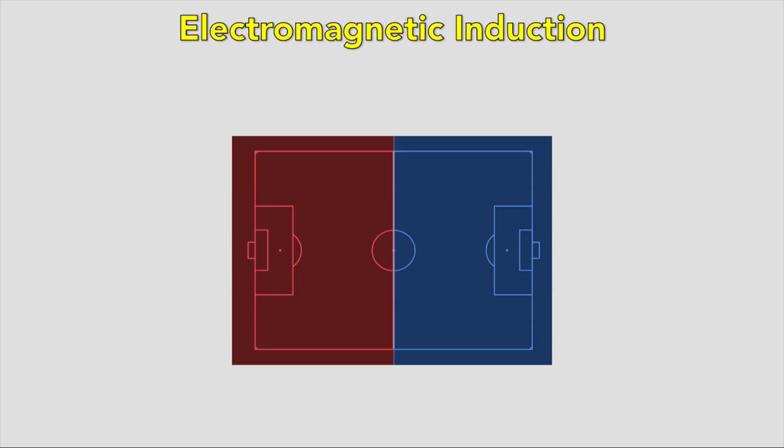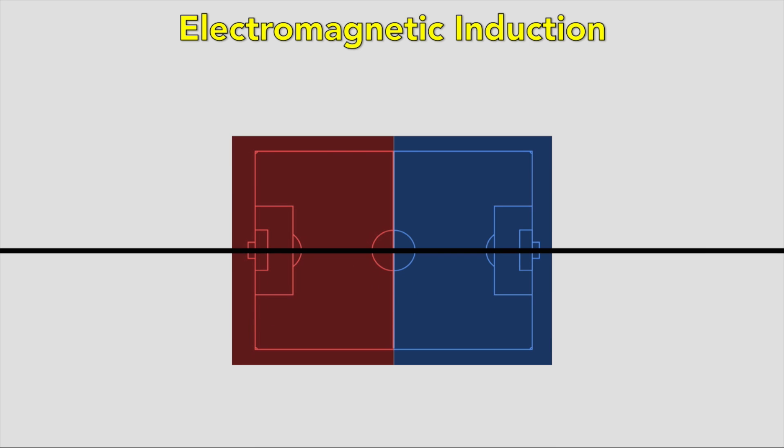Electromagnetic induction: if a conducting rod moves through a magnetic field, its electrons will experience a force, meaning they will accumulate at one end. This induces an EMF across the ends of the rod. If this rod is part of a complete circuit, then an induced current will flow through it. This is called electromagnetic induction. Moving a conductor through a magnetic field is called flux cutting.